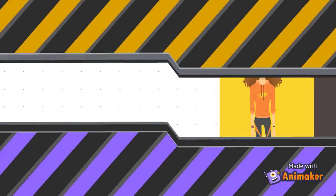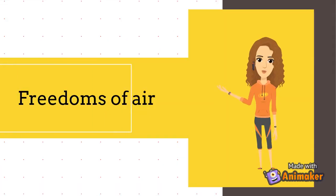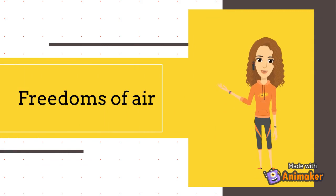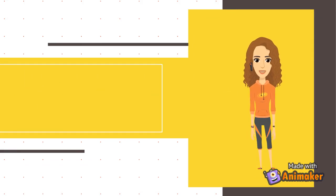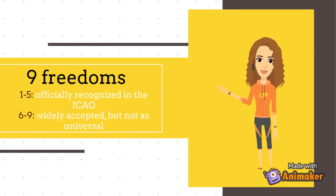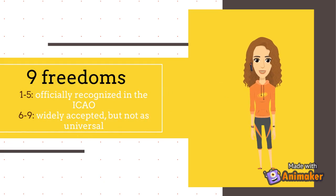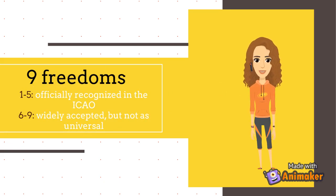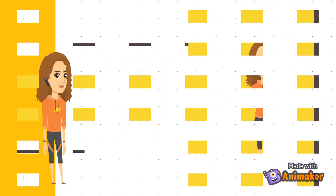Some things you have to know before proceeding about the freedoms of air: you have to know them in order. There are nine freedoms, five of which are officially recognized in the ICAO's Five Freedoms Treaty, while freedoms six through nine are widely accepted but not universal.